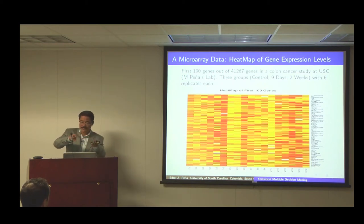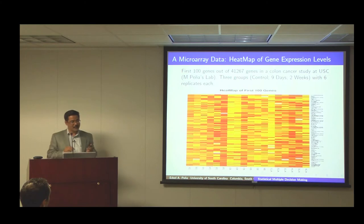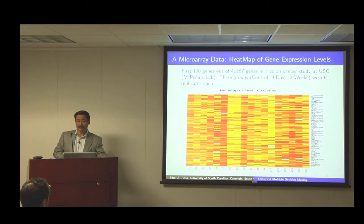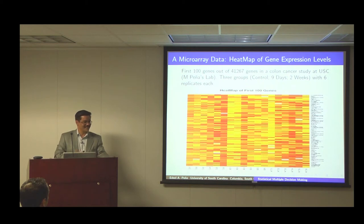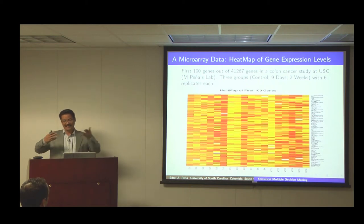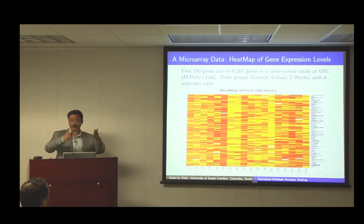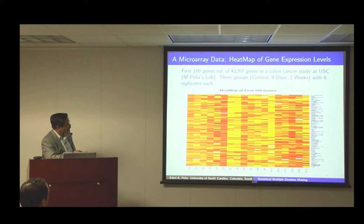We need to realize that such a big dataset is just incomplete or partial data. When you make a decision, you're going to make possible errors of decision — we cannot avoid that as statisticians. What we would like to do is to try to control the chances that we are going to make those mistakes. That's the basic game in statistics; that's why we have what we call type 1 and type 2 errors. Type 1 error is a certain type of error that we would like to control, while possibly minimizing the other type of error.